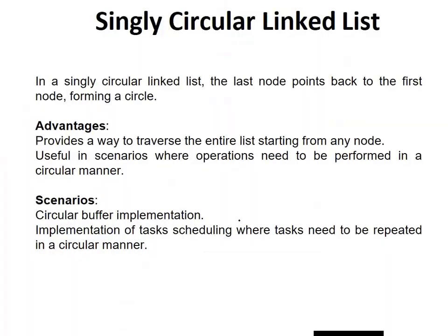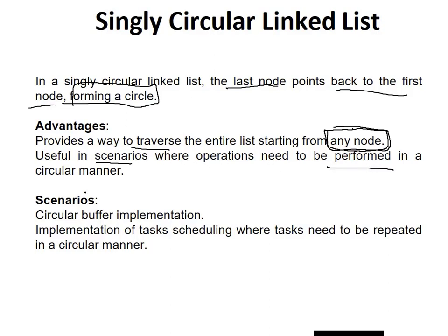In a singly circular linked list, the last node points back to the first node, forming a circle — which we just saw. The advantage is it provides a way to traverse the entire list starting from any node. That's very important: since it's a complete circle, starting from any point, you can reach the last point. It is useful in scenarios where operations need to be performed in a circular manner — where you start and end at the same point.